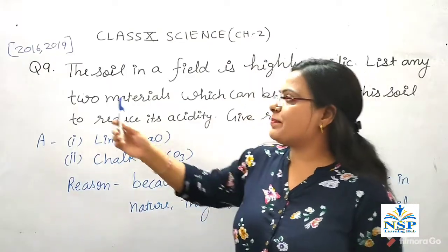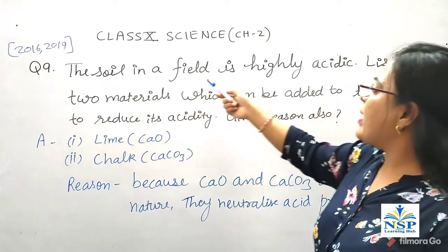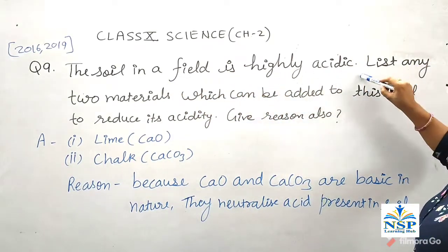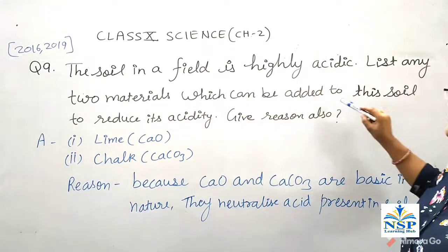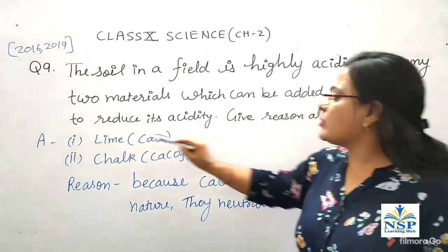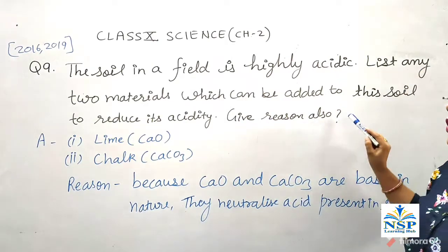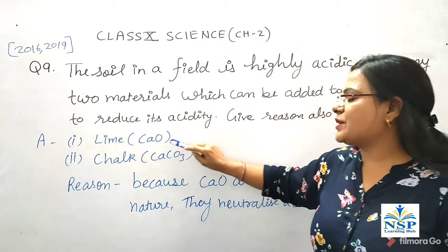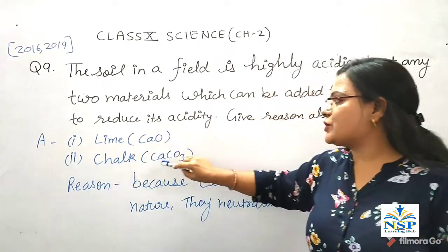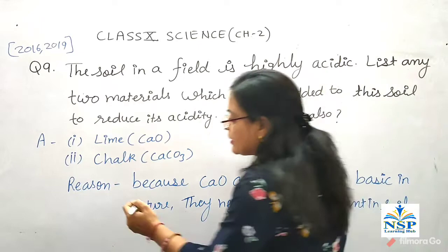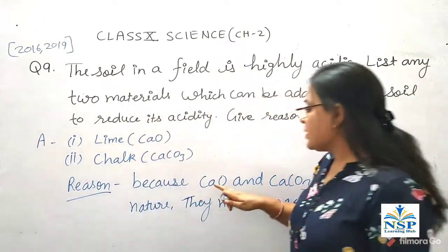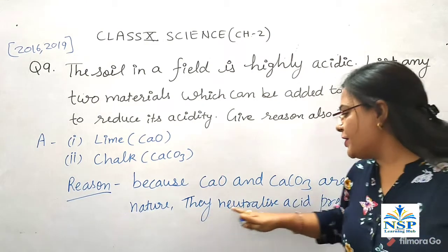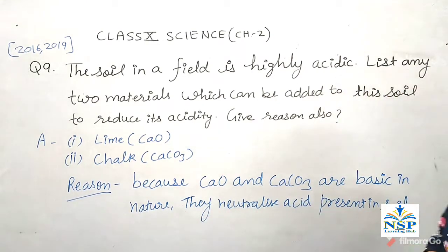Question number 9: The soil in a field is highly acidic. List any two materials which can be added to this soil to reduce the acidity; give reasons also. The two materials are: first, lime (calcium oxide) and second, chalk (calcium carbonate). The reason is that calcium oxide and calcium carbonate are basic in nature and they neutralize the acid present in the soil.